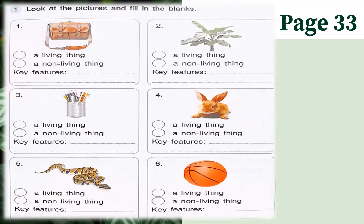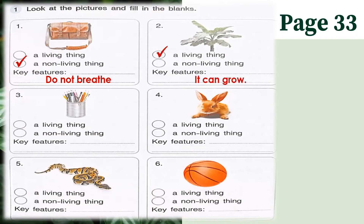Let's start with number one. This is a picture of a bag — is a bag a living thing or a non-living thing? If your answer is non-living thing, then you are very good. Now you have to write at least one key feature of a bag. Can a bag breathe? Bags do not breathe — since it is a non-living thing. You can pause this to write your answer. For number two, this is a picture of a plant. Is a plant a living thing or a non-living thing? Of course, this is a living thing because it can grow — plants can grow.